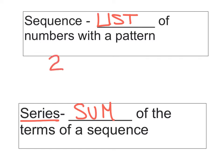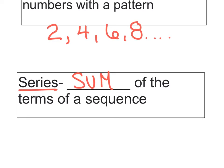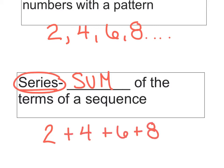If my sequence is 2, 4, 6, 8, the only difference between the sequence and the series is that instead of commas, I'm putting plus signs, because the series needs to sum them. So 2 plus 4 plus 6 plus 8. Hopefully between the last video and tonight's video, we get down the difference between the sequence and the series.